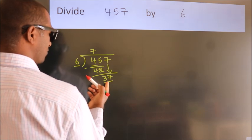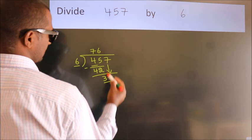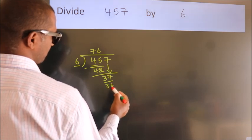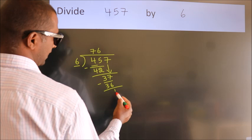A number close to 37 in 6 table is 6 times 6 equals 36. Now, we subtract. We get 1.